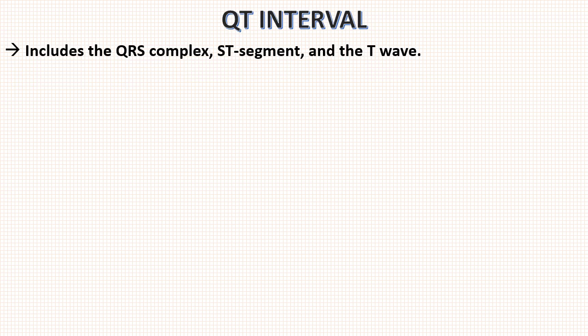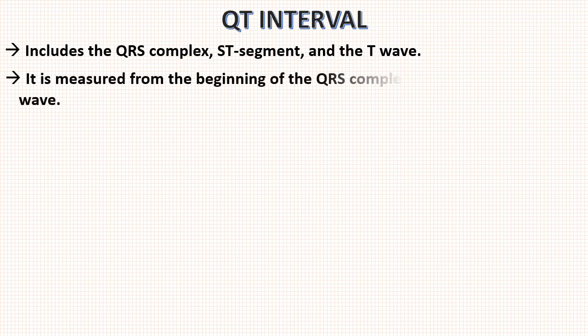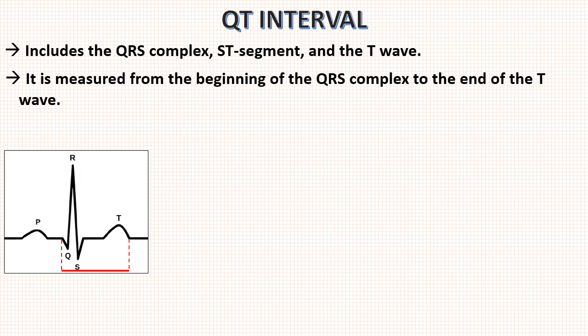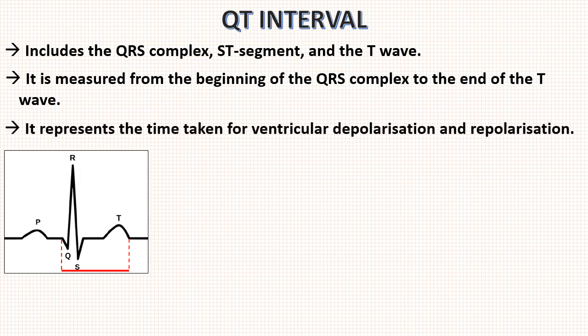Next is QT interval. The QT interval includes QRS complex, ST segment and the T wave. It is measured from beginning of the QRS complex to the end of the T wave. It represents the time taken for ventricular depolarization and repolarization.